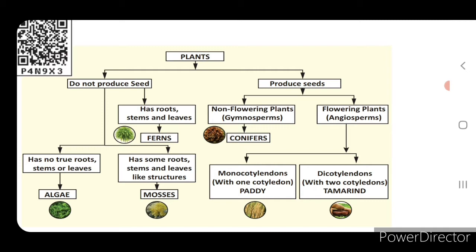Non-flowering plants that produce seeds - example gymnosperms, conifers. Flowering plants - example angiosperms. Angiosperms are again divided into two main categories: monocotyledons and dicotyledons. Monocotyledon means which is having only one cotyledon; dicotyledon means which is having two cotyledons.